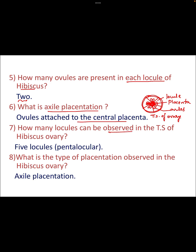How many locules can be observed in the TSO of hibiscus ovary? That is five locules — the appropriate term is pentalocular. What is the type of placentation observed in the hibiscus ovary? That is axial placentation. I hope these viva voce questions on the TSO of ovary experiment are clear for you students.